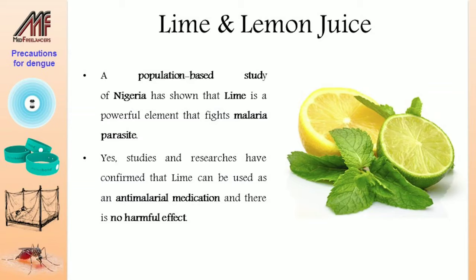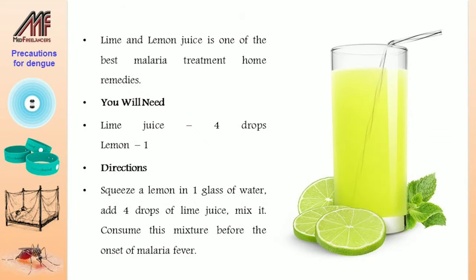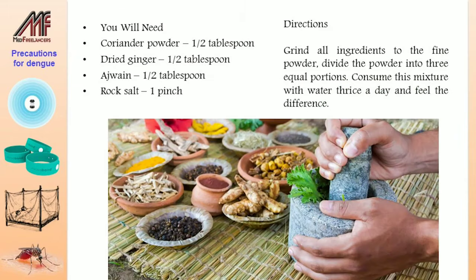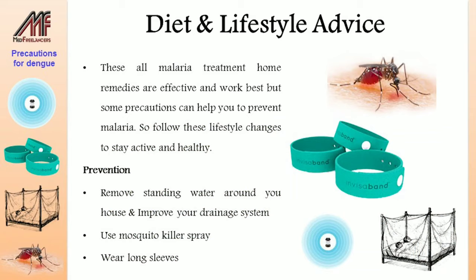A population-based study in Nigeria has shown that lime is a powerful element that fights the malaria parasite. Studies have confirmed that lime can be used as an anti-malarial medication with no harmful effects. Squeeze lemon into one glass of water, add four drops of lime juice, mix it, and consume this mixture before the onset of malaria fever. For Ayurvedic medicine, grind all ingredients to a fine powder, divide into three portions, and consume with water three times a day.